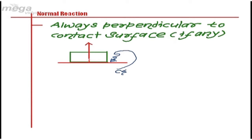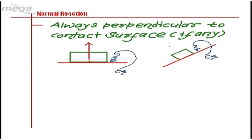If I talk about a block kept on an inclined plane, then no doubt we can say this is the contact surface. So, normal reaction will act perpendicular to this inclined surface.